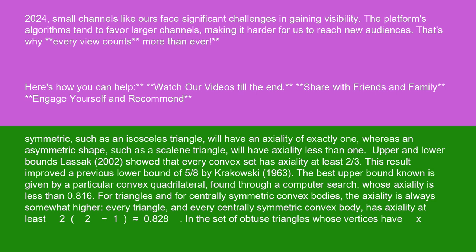For triangles and for centrally symmetric convex bodies, the axiality is always somewhat higher. Every triangle and every centrally symmetric convex body has axiality at least 2(√2 - 1) ≈ 0.828.